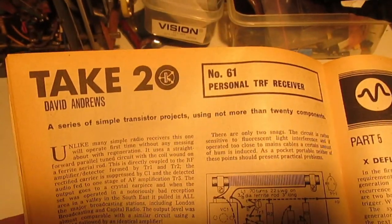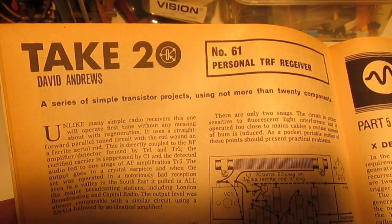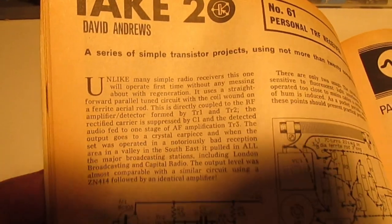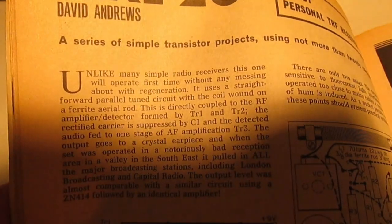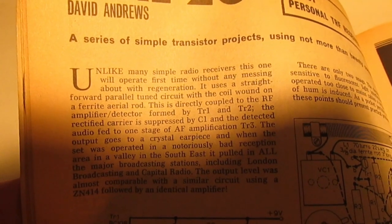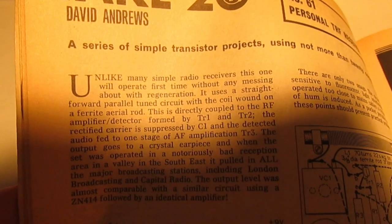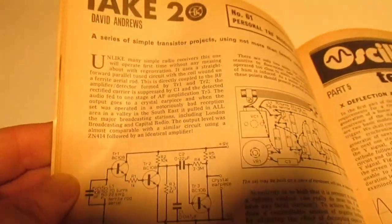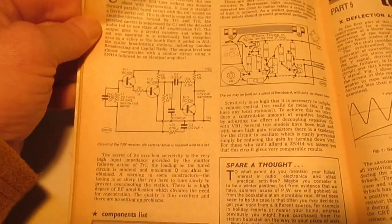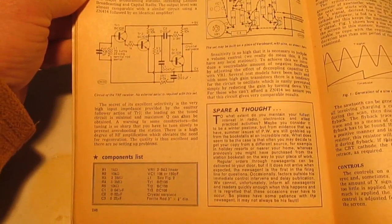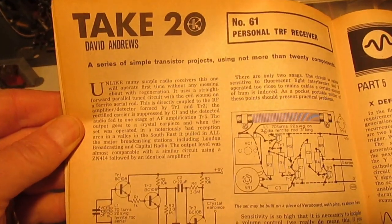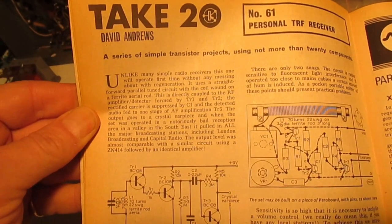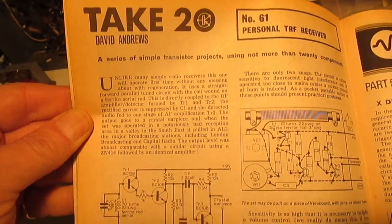Let's just turn over to the right page, and here it is. It's the Julian Anderson Take 20 series, number 61, a personal TRF receiver. Now it says here, unlike many simple radio receivers, this one will operate first time. So there's no point making something for a video and then you switch it on and it doesn't work, but I'm assured here this is going to work first time, so let's give this a go at building this.